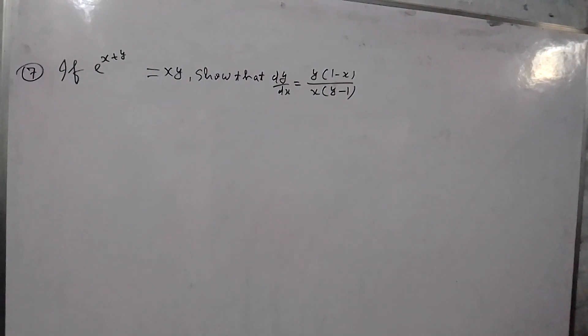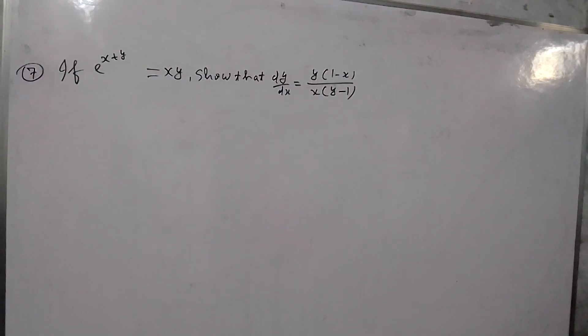If e raised to the power x plus y is equal to x into y, find dy/dx. The answer is dy/dx equal to y times (1 minus x) upon x times (y minus 1).